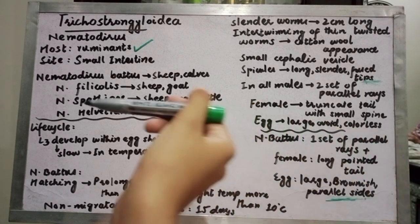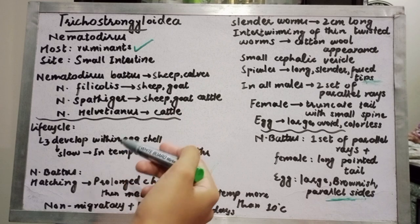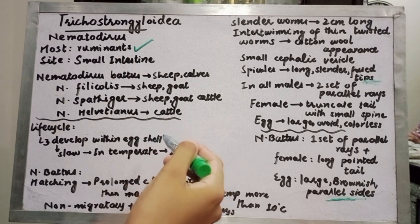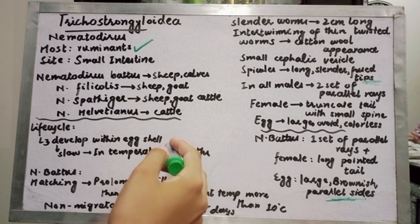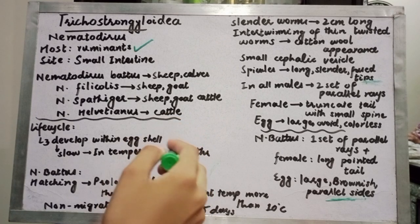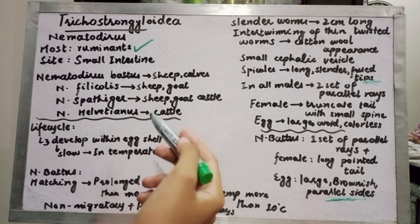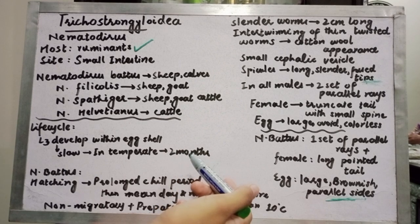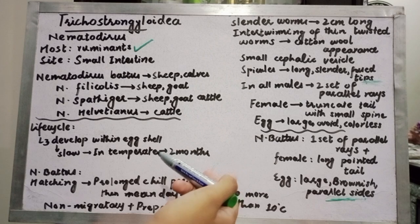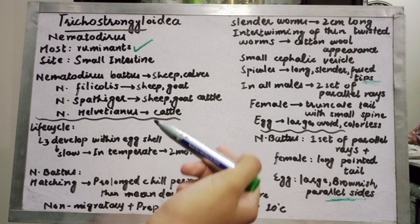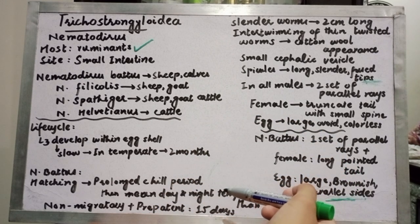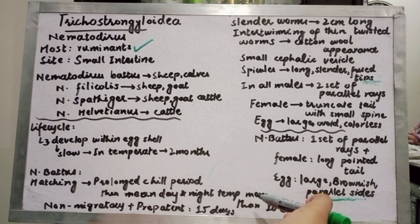Regarding the life cycle within the Trichostrongylidae family, the exception for Nematodirus is that the L3 larva develops within the eggshell. This development process is slow — in temperate areas it takes approximately two months. For hatching to occur, a prolonged chill period is required, after which the mean day and night temperature must exceed 10 degrees Celsius.